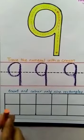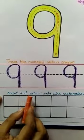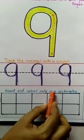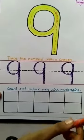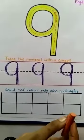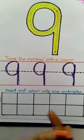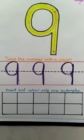Now count and color only 9 rectangles. How many rectangles do we have to color? Only 9. First we will count the rectangles.